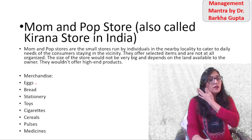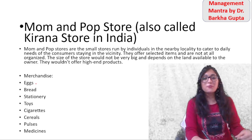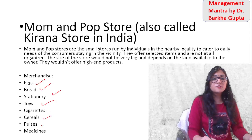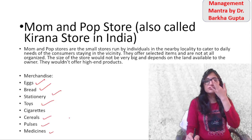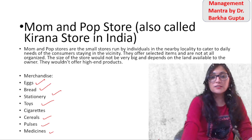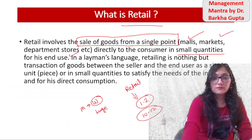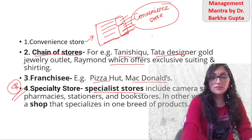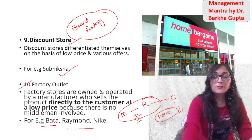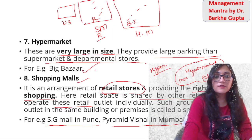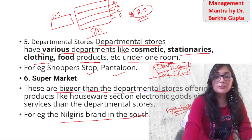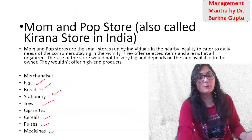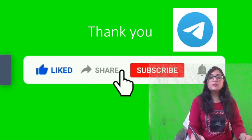And then there are Mom's and Pop stores — we call them normal Kirana stores or convenience stores. They sell eggs, bread, stationery, toys, cereals, pulse, medicine. This is all about your retail format and all the stores that you need to know. Keep in mind the difference between supermarket, hypermarket, and shopping mall.